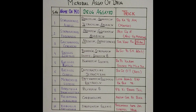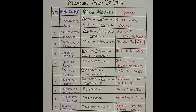The last one is Klebsiella pneumoniae, and the drug is Streptomycin sulfate. The trick is 'Pneumonia hone par Strepsil khao' — pneumonia for Klebsiella pneumoniae, and Strepsil as a mnemonic for Streptomycin.